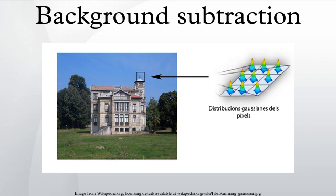MoG background subtraction: each pixel is characterized by its intensity in RGB color space. The probability of observing the current pixel is given by a formula in the multidimensional case, where k is the number of distributions, omega_i is a weight associated to the i-th Gaussian at time t, with mean mu_i and standard deviation sigma_i. Once parameter initialization is made, a first foreground detection is performed, then the parameters are updated. The first b Gaussian distributions which exceed the threshold T are retained as background distributions. A pixel matches a Gaussian distribution based on the Mahalanobis distance, where k is a constant threshold.